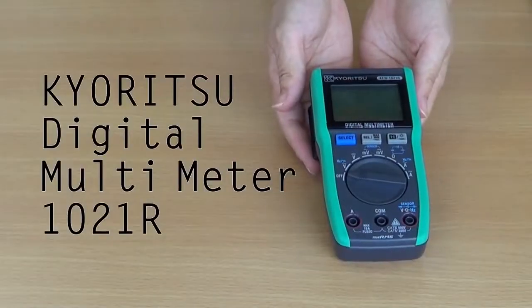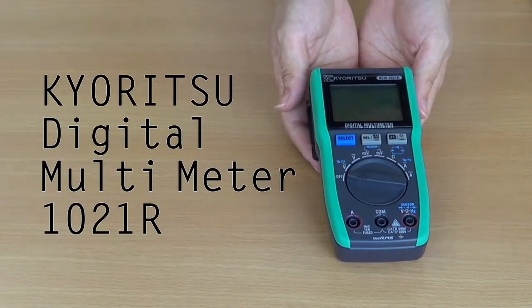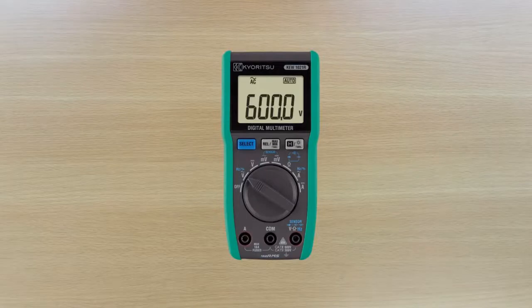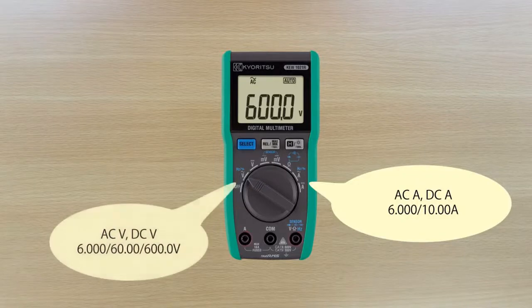We would like to introduce the new Kyoritsu KEW1021R Digital Multimeter. Here are some basics. The 1021R measures AC and DC current up to 10A and also AC-DC voltage up to 600V.